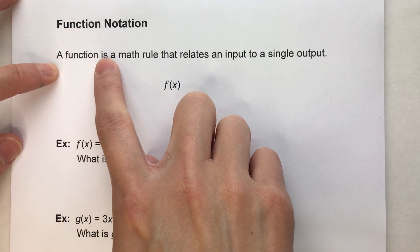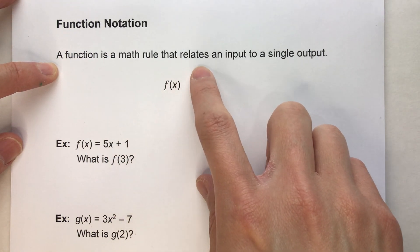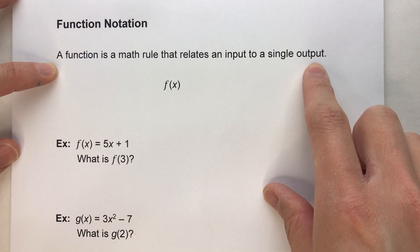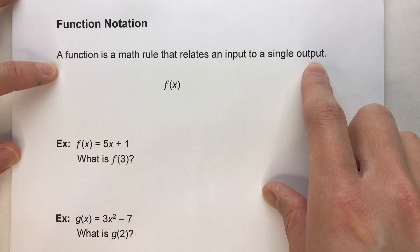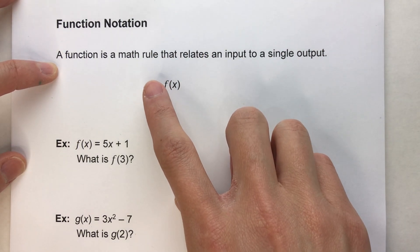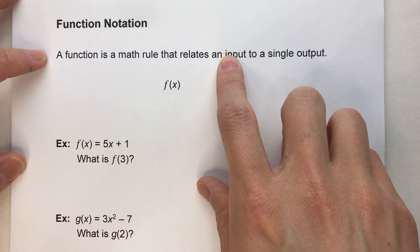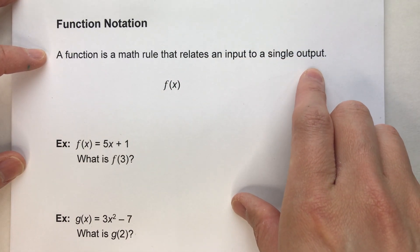In math, a function is basically a math rule. It just relates an input to a single output. A lot of people think of it as an equation. You put a number into the equation, that's your input, and you get an answer out, and that's our output.